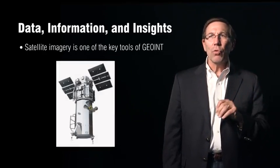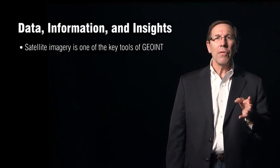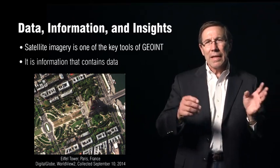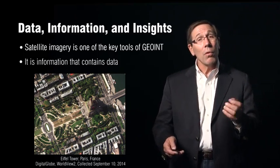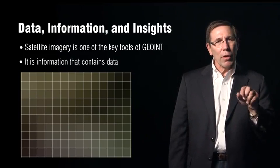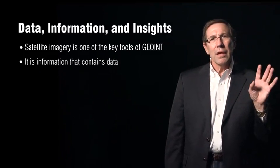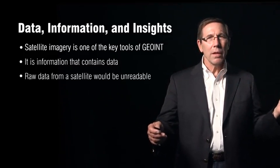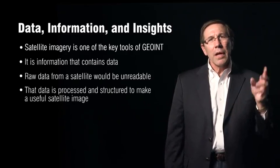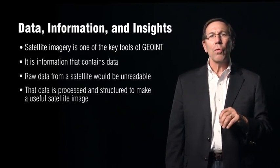Satellite imagery is one of the key tools of GEOINT. Some people say it's the heart of GEOINT, but I think there's much more to it than that. Satellite imagery in itself is information that contains data. If you break that satellite imagery down, you'll find that it's comprised of pixels, which stands for picture element. Every one of those picture elements represents a portion on the Earth's surface. The raw data fed from the satellite would be a string of numbers. That data then has to be processed, arranged, organized, structured, and presented so as to give the analyst a useful satellite image.